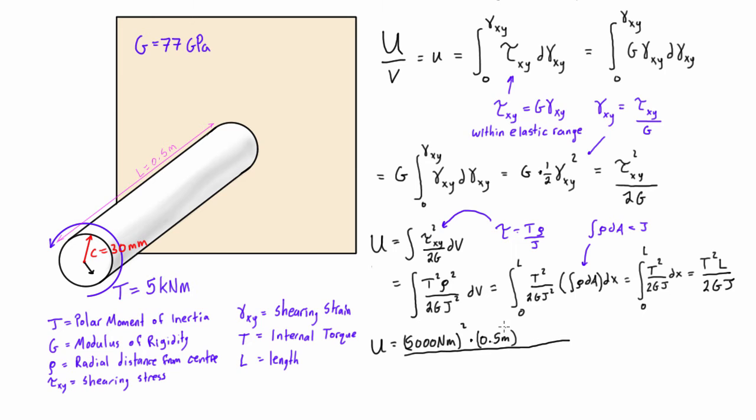And on the bottom here we have 2 times modulus of rigidity is 77 gigapascals, so that is 77 times 10 to the 9 pascals, which is newtons per meter squared. And our polar moment of inertia is 1.272 times 10 to the negative 6 meters to the fourth.